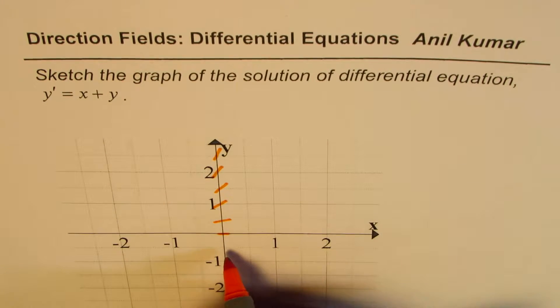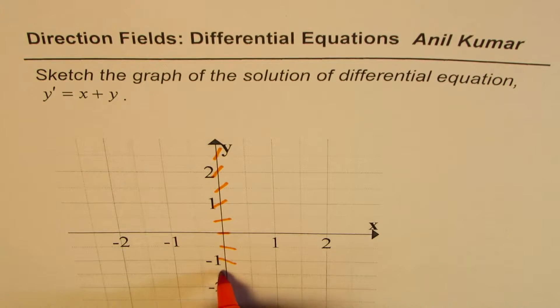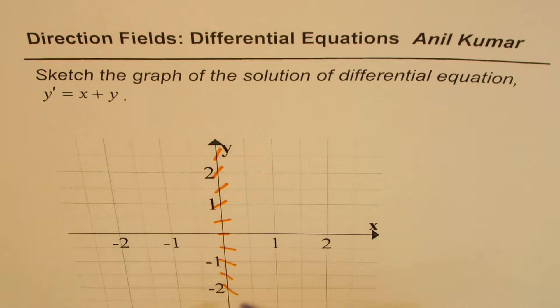And for the negative portion, as you can see, negative 1 will be like this. This will be slightly lesser. This will be more than this, kind of like this.